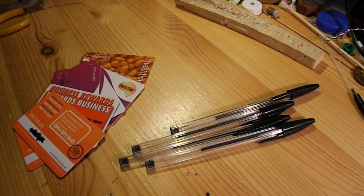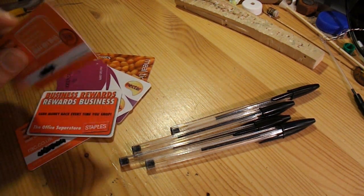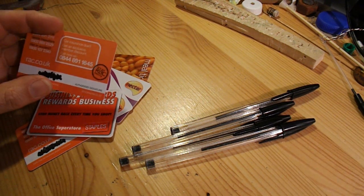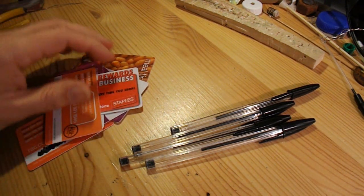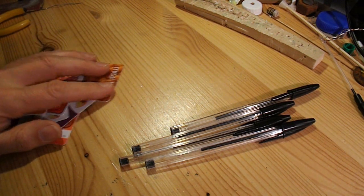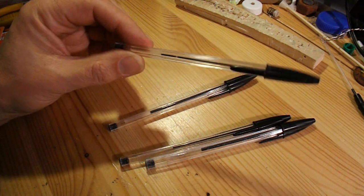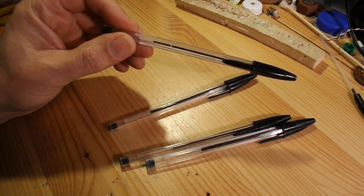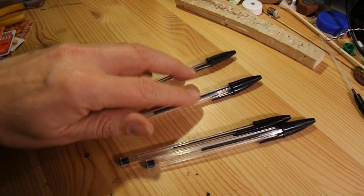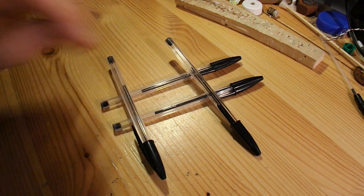Now I'm going to make the wheels and chassis. The wheels I'm going to cut out of these, well they're not credit cards but they're store cards, loyalty cards, that sort of thing. I'm going to cut some circles out of them for wheels or discs. And then I'm going to use these ball pens as the chassis. Two for the sides and two to hold the axles.